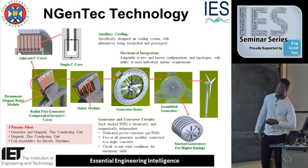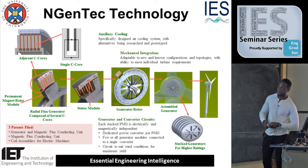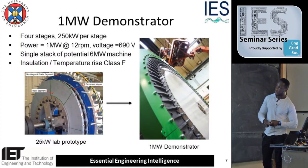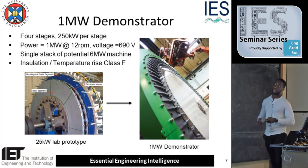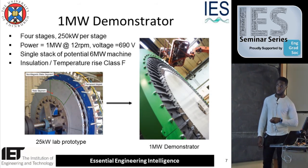A few other interesting factors: the machine can be connected in different manners — each stage can be connected across or going around the diameter of the machine. This is a prototype demonstrator, a one megawatt machine, consisting of four stages, each stage about 250 kilowatts. The beauty of this was we managed to upgrade from the 25 kilowatt machine to a one megawatt demonstrator, which just shows the stackability of this sort of machine.